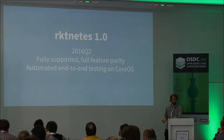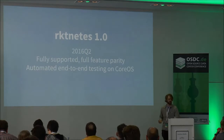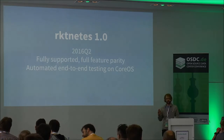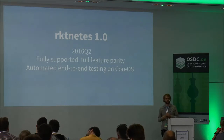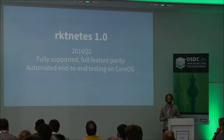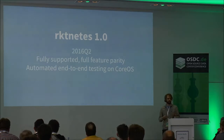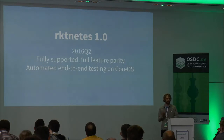Looking at what's coming up: Rocket-on-Kubernetes 1.0 is something we want to have finished by Kubernetes 1.3, roughly the end of this quarter. That means it's fully supported as a backend with full feature parity with Docker, so you literally can't notice the difference as an end user. We're guaranteeing that through automated end-to-end testing constantly running on CoreOS and other distributions, and we plan to make that all publicly visible — so every PR to Kubernetes is tested end-to-end against Rocket as well as Docker.